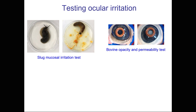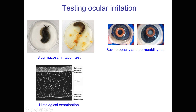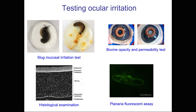We have also adapted an industrial test called the bovine opacity and permeability test, where we use freshly excised bovine eyes and look at how different chemicals could damage the corneal surface. Additionally, we can look at histological images of freshly excised eyes exposed to different irritants and compounds being tested, and examine the structure of the epithelium. Finally, we recently developed a new test — which we call the planaria fluorescent assay — using flatworms called planaria, and we observe how much damage a formulation could cause to planaria.